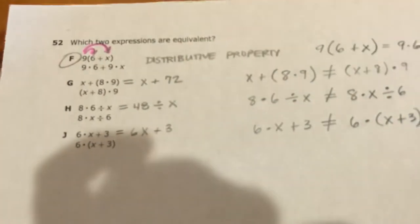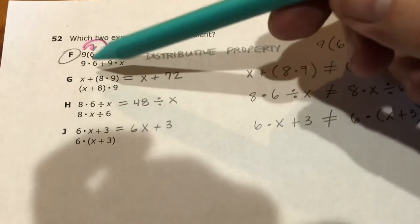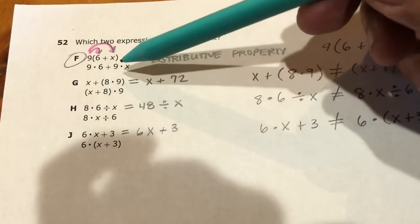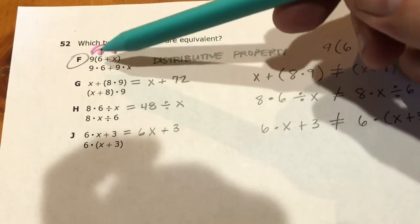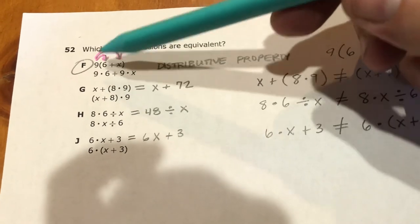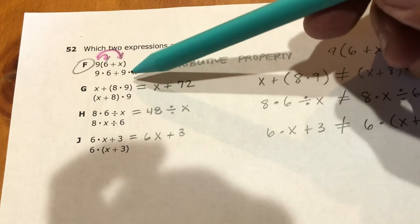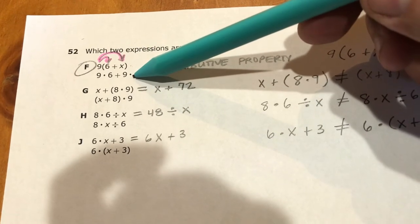Well, this first one is using the distributive property. You're taking that 9, you're multiplying it by everything inside the parenthesis. So 9 times 6, which you see here, and 9 times x, which you see here. So those two things, this and this, are equivalent.